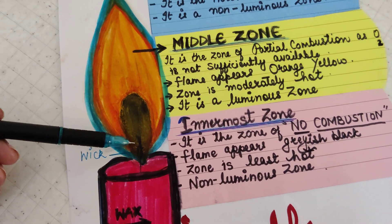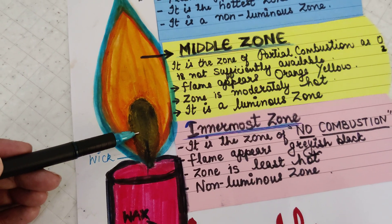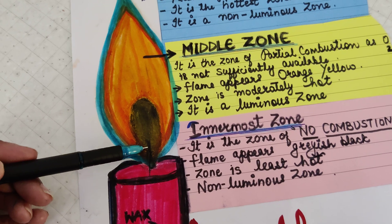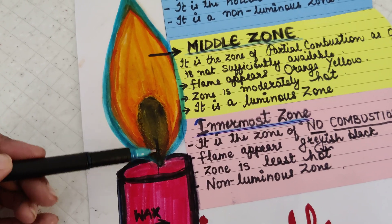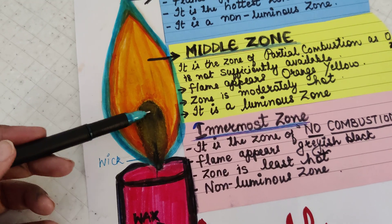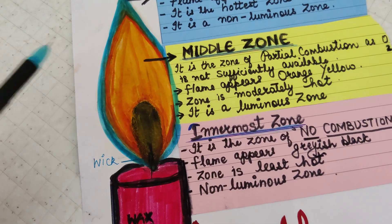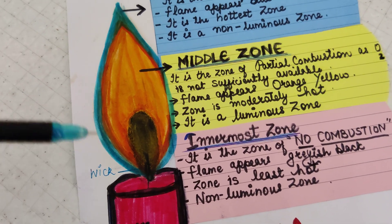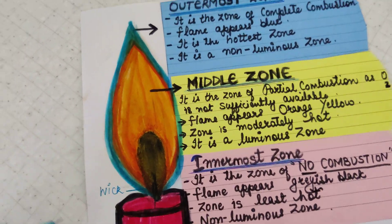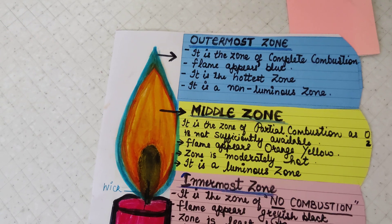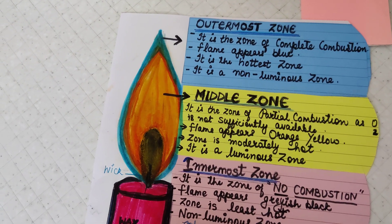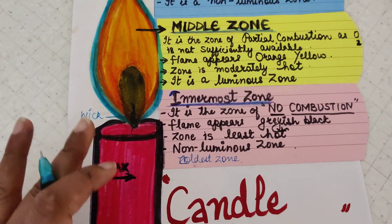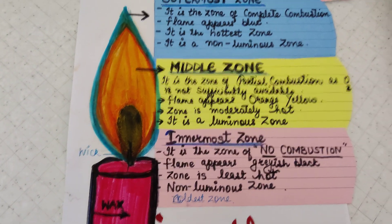Now comes the innermost zone, which is the inner portion around the wick. This is difficult to see in a candle. It is the coldest part of the zone - the coldest zone overall. Here there is no oxygen and no combustion of fuel takes place, making it the zone of no combustion.